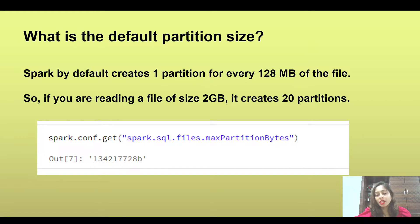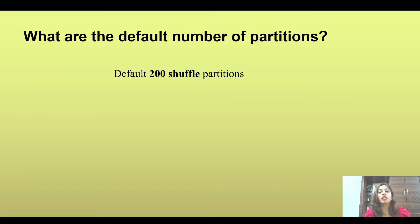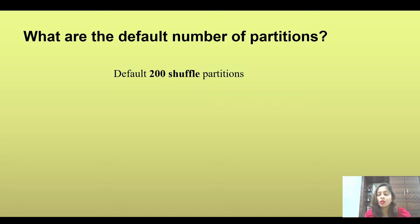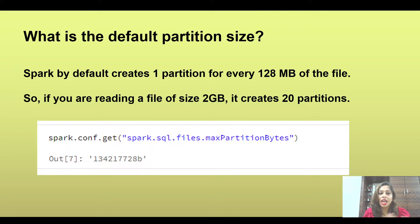The second question is: what are the default number of partitions created? The default number of shuffle partitions is 200. You should know that 200 shuffle partitions are created by default, and you do have parameters available to change both the number of partitions and the size of partitions if required.